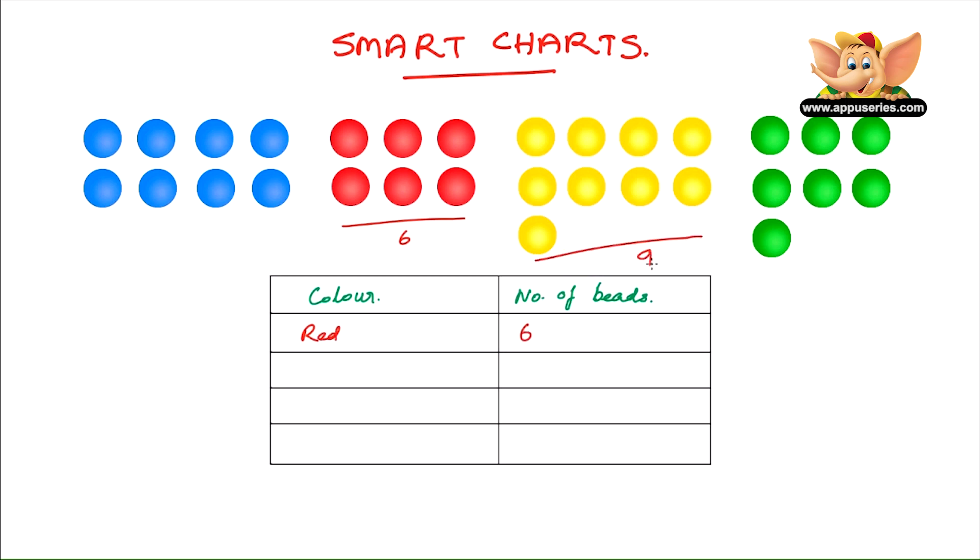Then we have nine yellow beads, the color is yellow and the number of beads is nine. The next one we have seven green beads, color would be green, the number would be seven. The next one we have eight blue beads, so that would be blue in the color and eight for number.